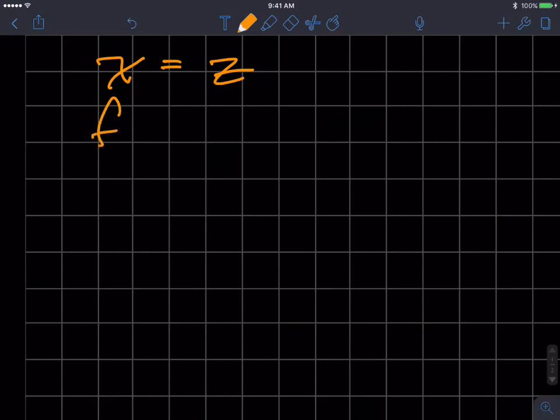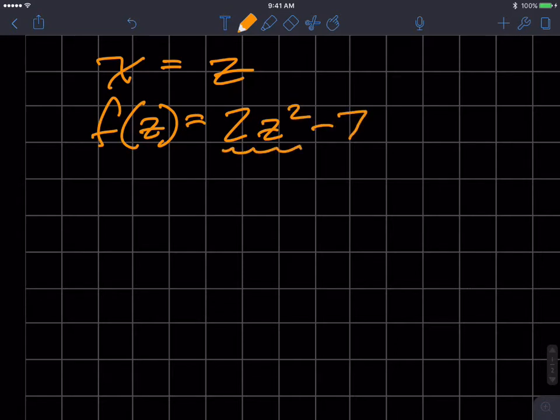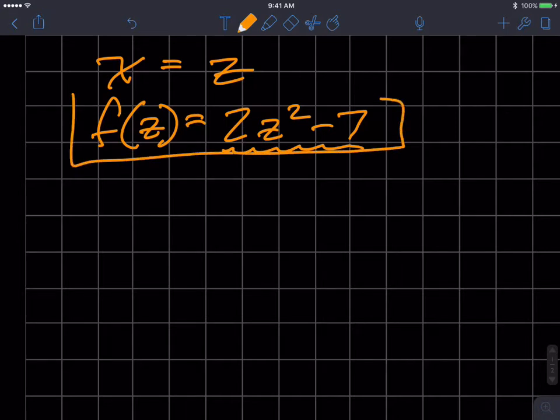So that means that f of z is equal to 2z squared minus 7. Since I can't do any more simplification of that expression, that is my function when x equals z.